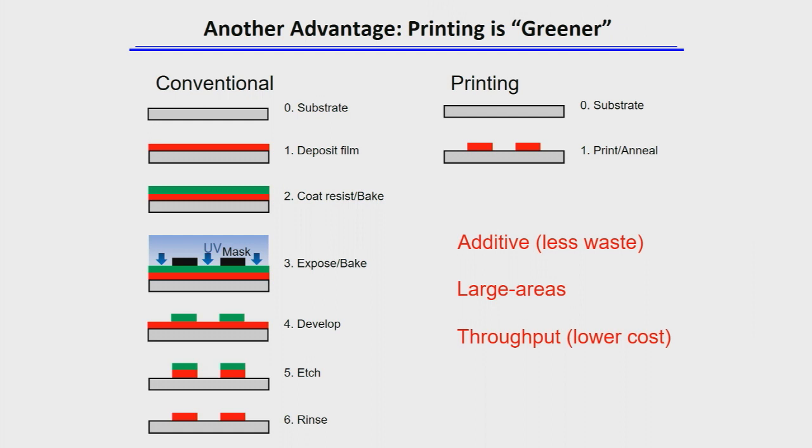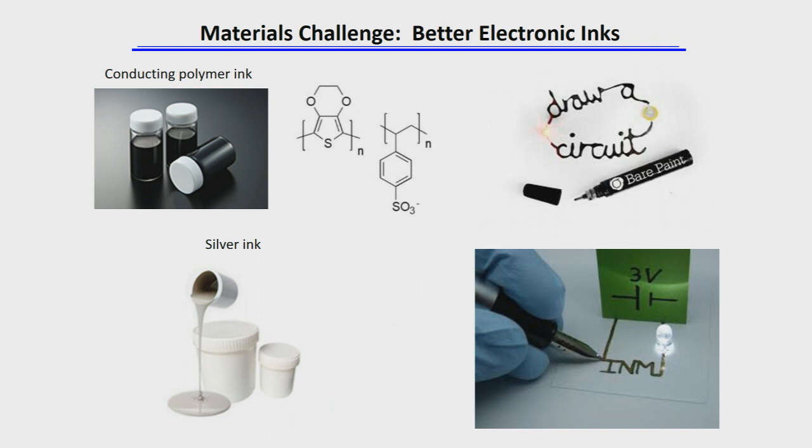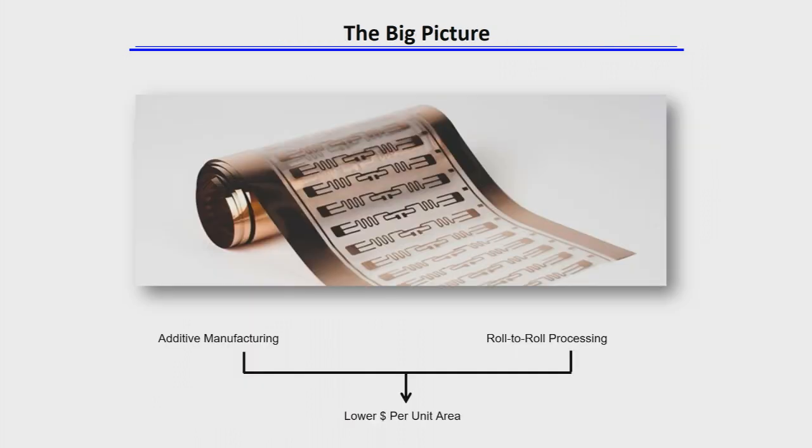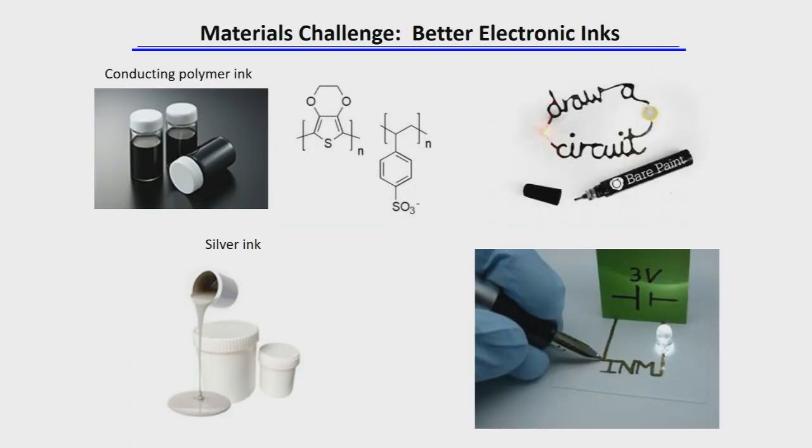So in my mind, the big picture for doing printed electronics is that we are combining additive manufacturing with roll-to-roll processing to achieve lower cost per unit area. But it's not just about cost. It's also about having new flexible form factors for electronics. So now I want to switch to thinking about what are the challenges and what are we doing at the university to address some of these challenges. One is we need better inks.